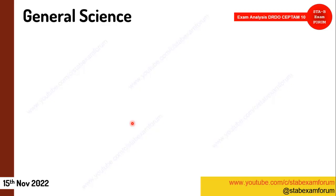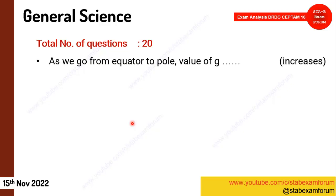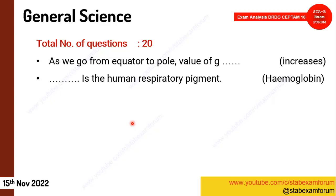There were approximately 20 questions in General Science. The first question was: as we go from equator to pole, the value of G — whether it increases, decreases, or remains constant. The correct answer was 'increase.' This question has been covered in our video on gravitation.